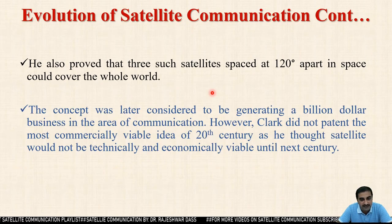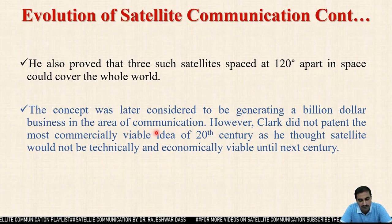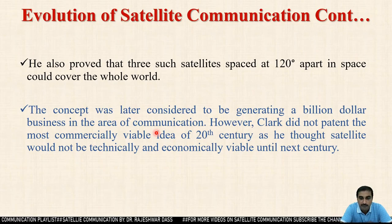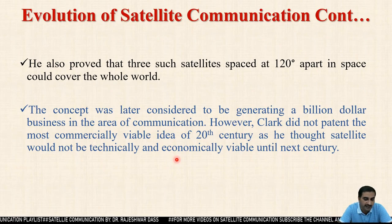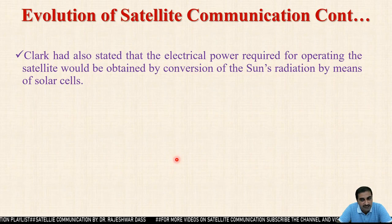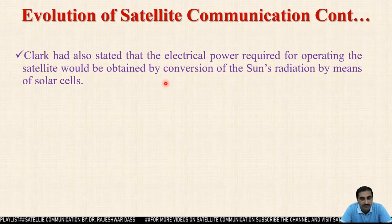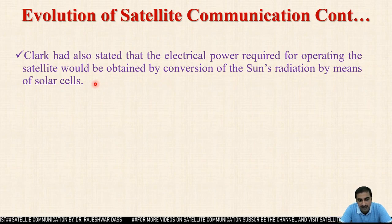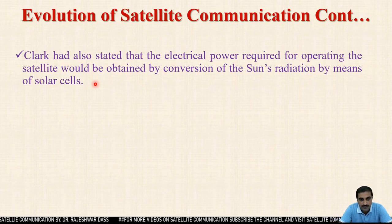He also proved that three such satellites spaced 120 degrees apart could cover the whole world. The concept was later considered capable of generating a billion-dollar business in communications. However, Clarke did not patent this commercially viable idea because he thought it would not be technically and economically viable until the next century. Clarke also stated that electrical power for the satellite would be obtained by conversion of the sun's radiation using solar cells.